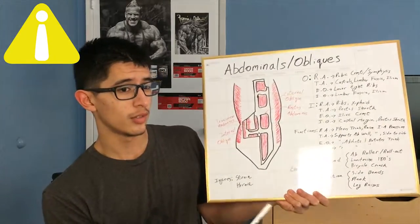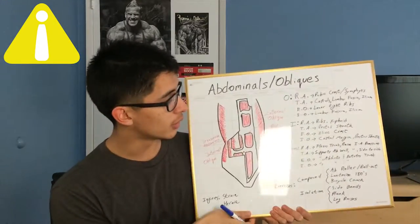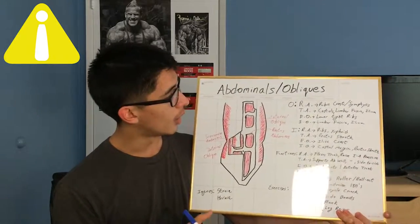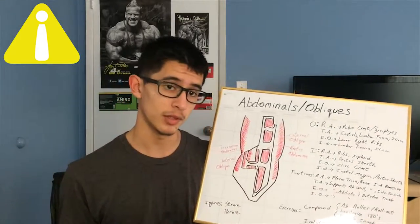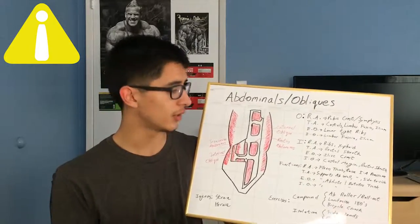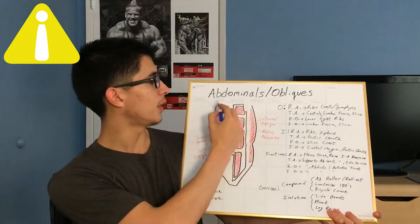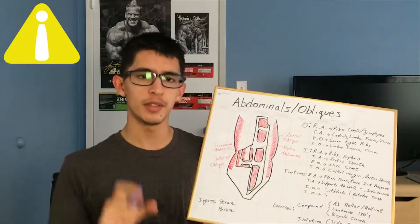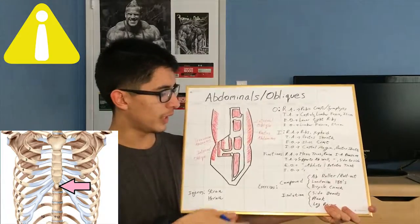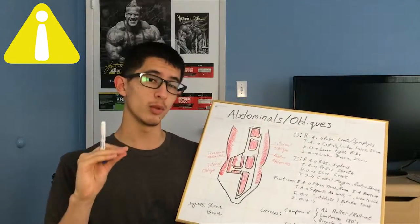Now for the origin and insertion — each muscle group has its own different origin and insertion. For the rectus abdominis, it originates on the pubic crest and pubic symphysis — way down in the pelvic area near the groin. It inserts into your ribs and the xiphoid process, which is a small bone beneath your sternum. So it brings your body down or crunches it into a folding chair position.